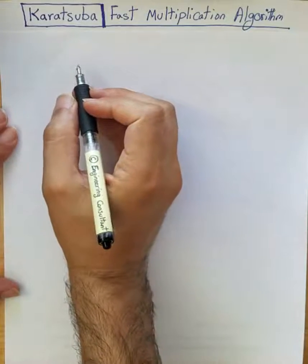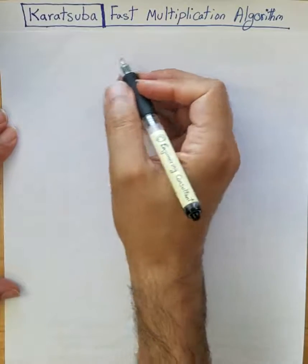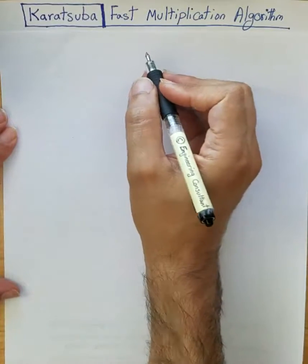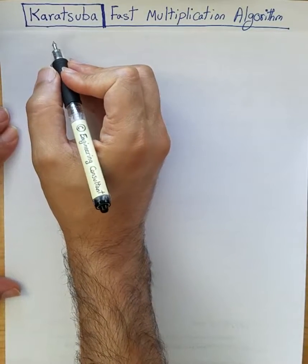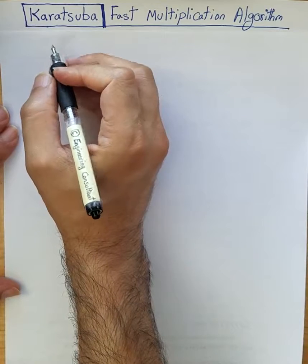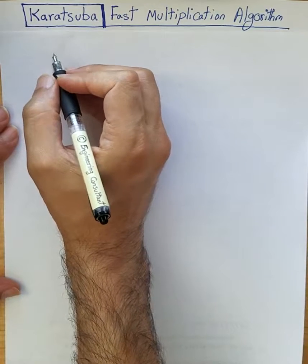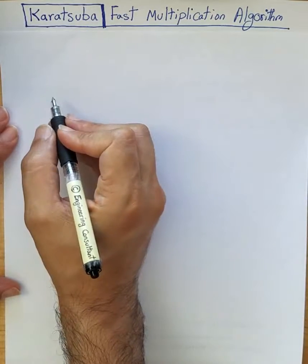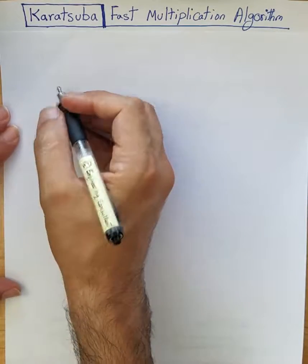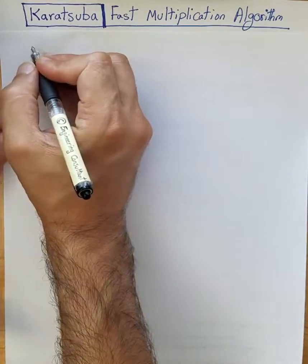In order to perform fast multiplication, Karatsuba's method provides us with a quick way of achieving faster computation time. What is that?